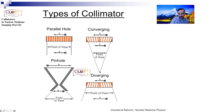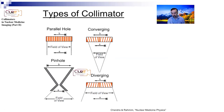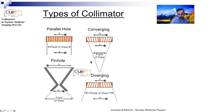You can convince yourself geometrically: imagine a point source for a converging collimator - all the collimator channels are receiving counts from it. As the source moves further, a similar angular range means even more channels can detect it. But for diverging and pinhole collimators, you're going to have smaller solid angle coverage. You can do some drawings and try to convince yourself of this through geometric reasoning.